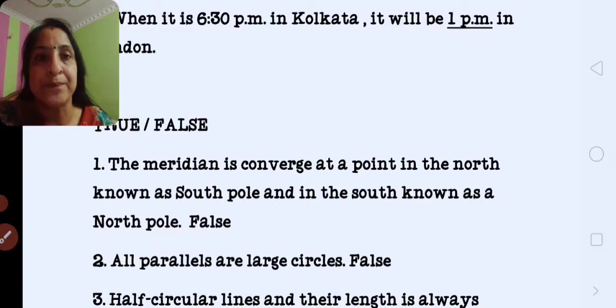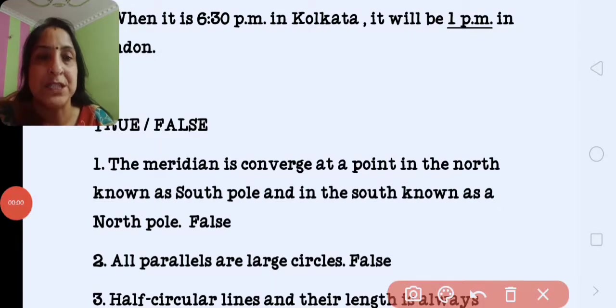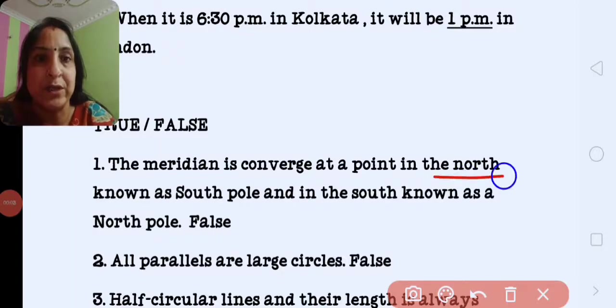Next is our true false. The meridian is converged at a point in the north known as south pole and in the south known as the north pole. This statement is false, because the north is known as the north pole, not the south pole, and the south is known as the south pole, not the north pole.